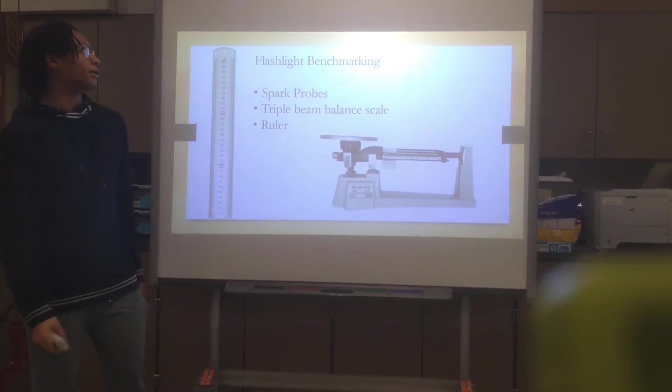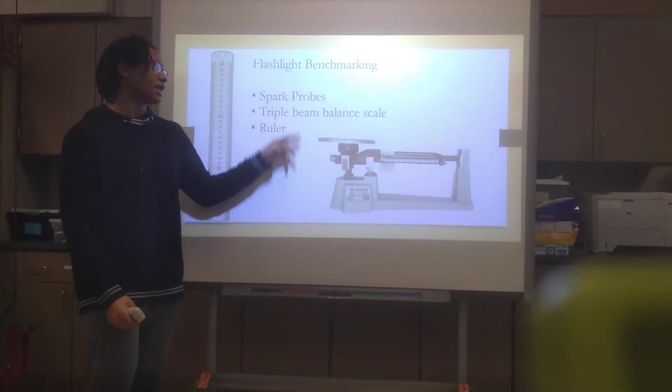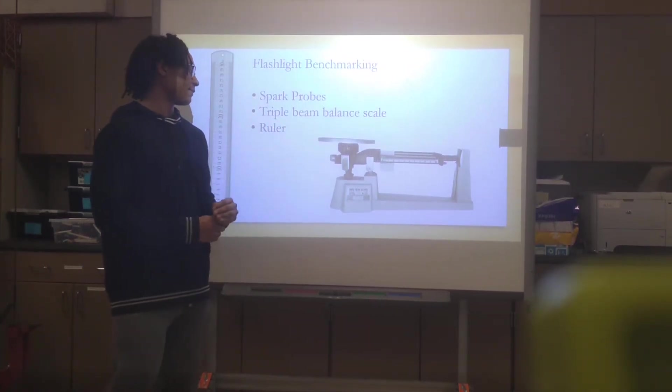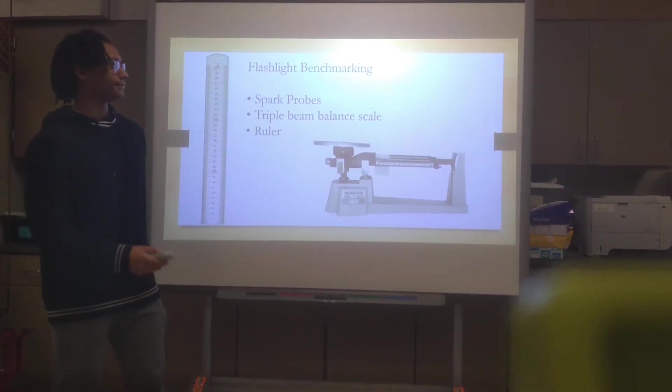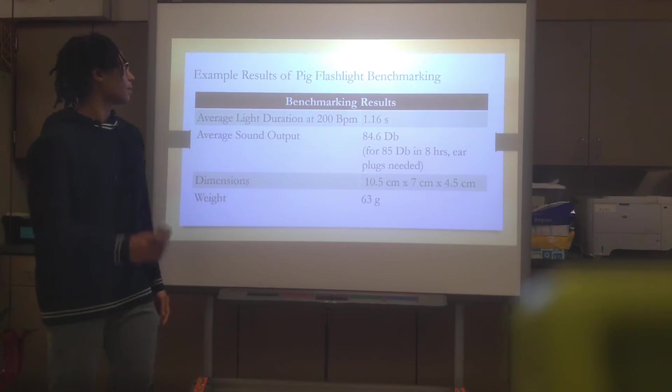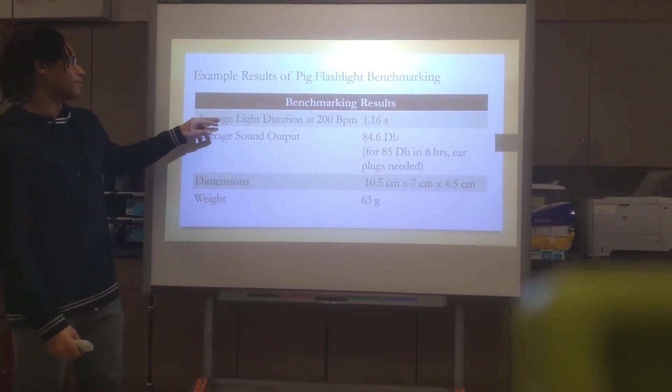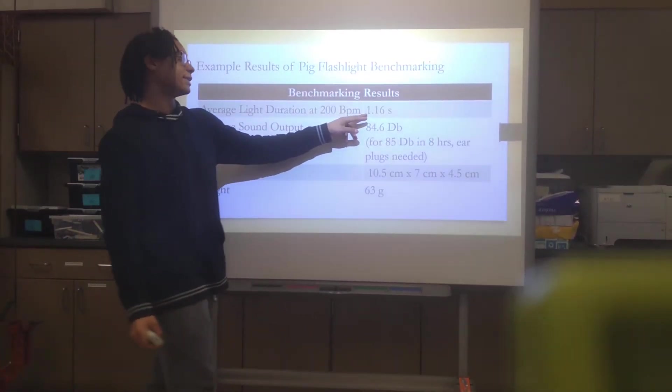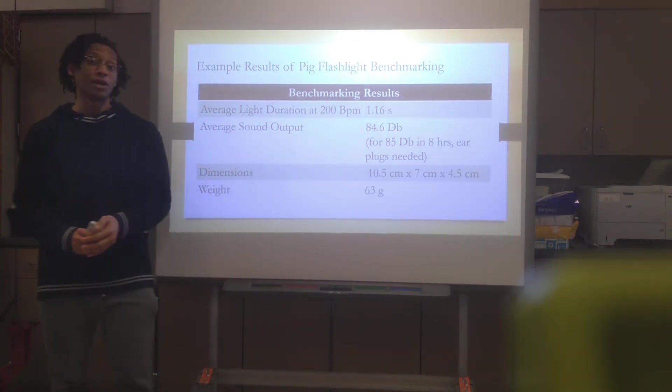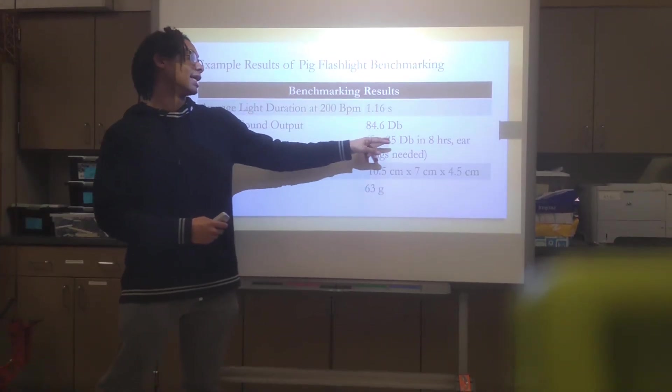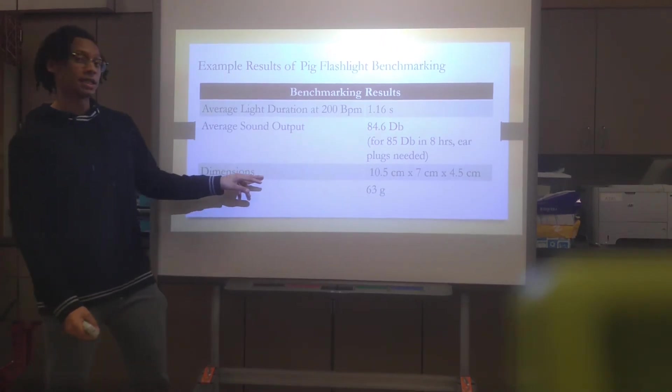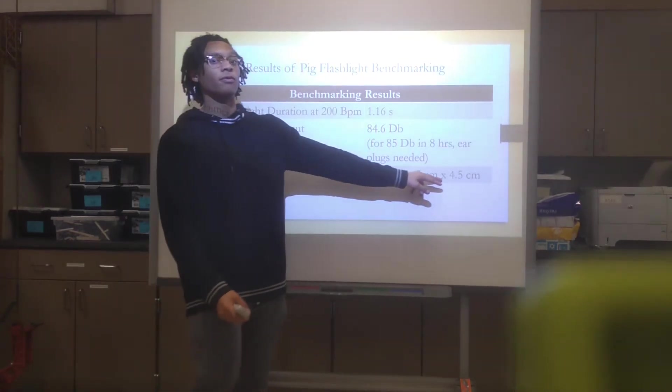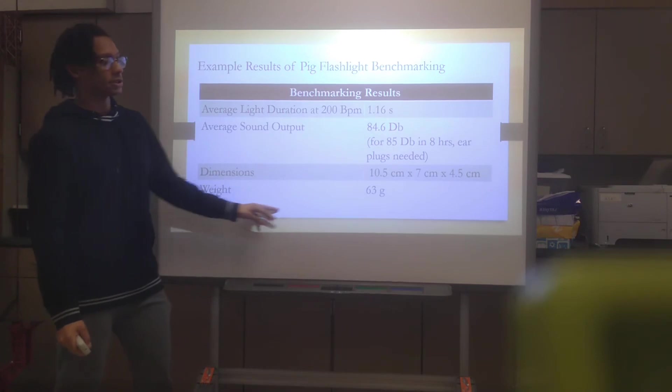Flashlight benchmark. We use a smart probe to find the light's duration and sound output, a triple beam balance scale for the weight of the flashlight, and a ruler for its dimensions. Here are some of the examples from the benchmarking. The average light duration at 200 beats per minute was 1.16 seconds. The average sound output was 84.6 decibels. The dimensions of the flashlight originally was 10.5 cm by 7 cm by 4.5 cm. Its weight was 63 grams.